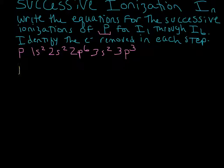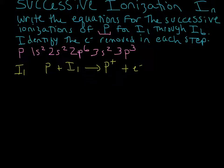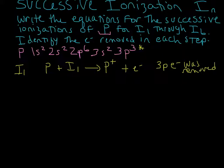Let's do I1 first. This is the first ionization, so we're going to take a phosphorus atom, put in I1 worth of energy, and we're going to remove an electron — ending up with a phosphorus 1+ cation plus an electron. I1 is the amount of energy it takes to remove an electron from phosphorus to create phosphorus 1+. The electron removed was a 3p electron.